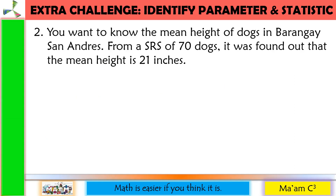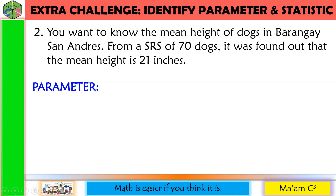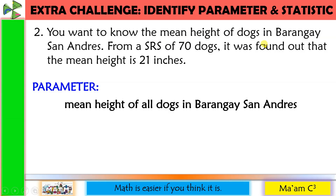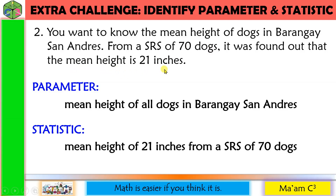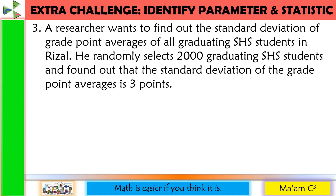Number two: you want to know the mean height of dogs in Barangay San Andres. From a simple random sample of 70 dogs, it was found out that the mean height is 21 inches. The parameter is the mean height of all dogs in Barangay San Andres. The statistic is the mean height of 21 inches from the simple random sample of 70 dogs.